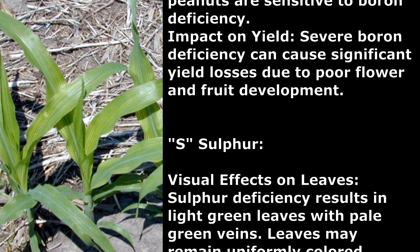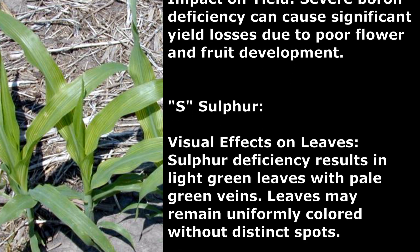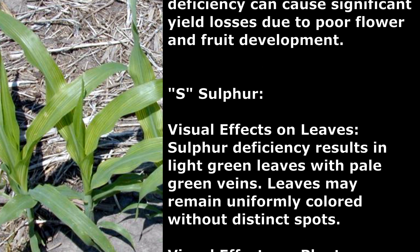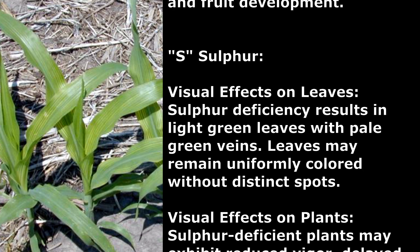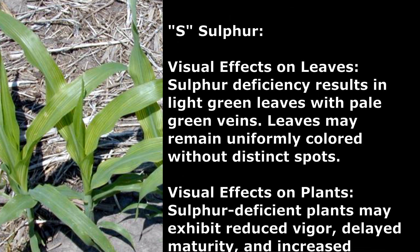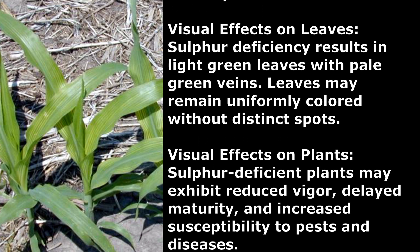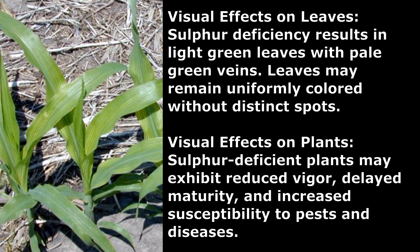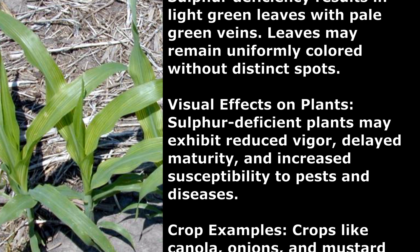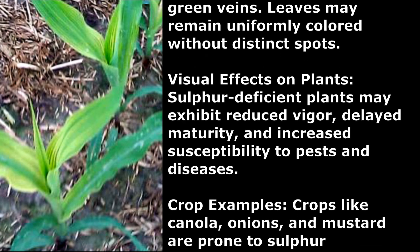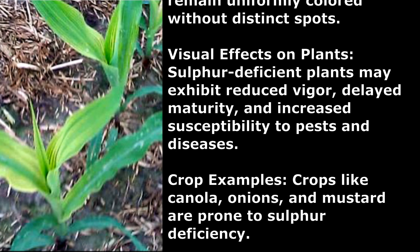Sulphur. Visual Effects on Leaves: Sulfur deficiency results in light green leaves with pale green veins. Leaves may remain uniformly colored without distinct spots. Visual Effects on Plants: Sulfur-deficient plants may exhibit reduced vigor, delayed maturity, and increased susceptibility to pests and diseases.